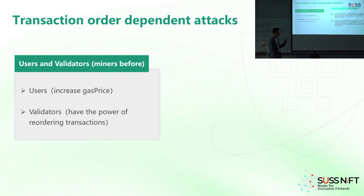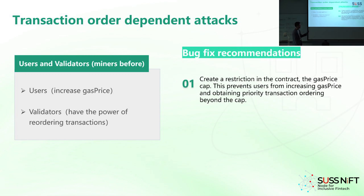Transaction order-dependent attacks happen because of two factors. First, users can increase gas price. Second, validators have the power to reorder transactions. We have two ways to prevent this type of attack. We can create a restriction in the contract — a gas price cap — which prevents users from increasing gas price and obtaining priority transaction ordering beyond the cap. But it's still not perfect. If the attacker is actually the validator, then the attacker can still include his own transaction before the hard-working user, even with a gas price cap.